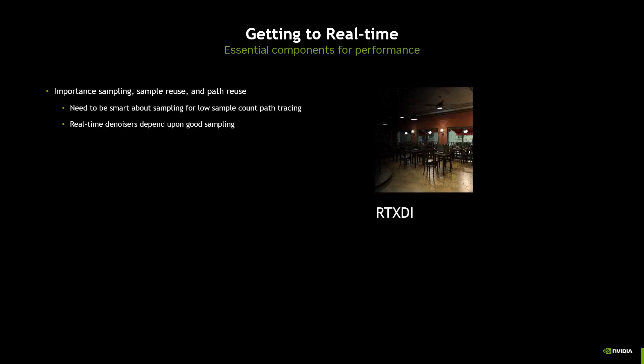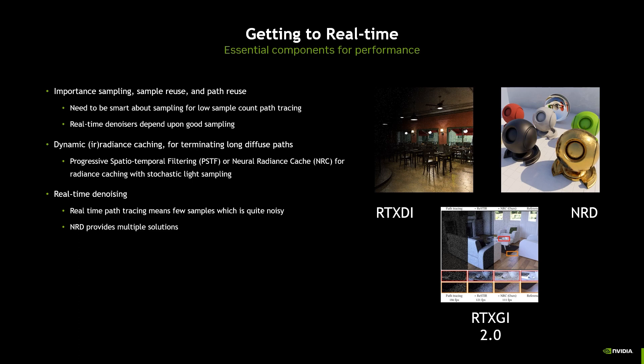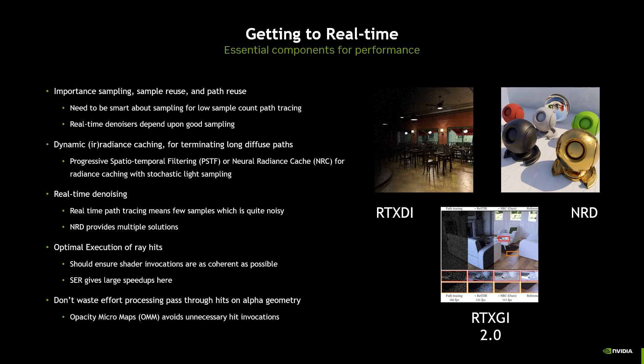Within that pipeline, there are a number of essential components for real-time performance. First is importance sampling: for real-time performance we need extremely low sample counts, and you need smart sampling to ensure high quality. Real-time denoising also depends on good sampling. Next, you need dynamic radiance caching or irradiance caching to terminate long diffuse paths. You also need real-time denoising because your sample count won't be sufficient to avoid noise. Finally, there are optimization techniques targeting common bottlenecks in path tracing. Fortunately, we have solutions in place for all of these, rolled into a path tracing SDK.